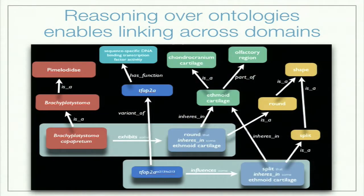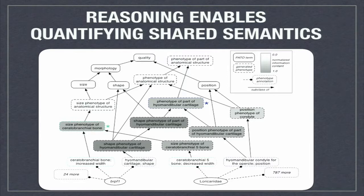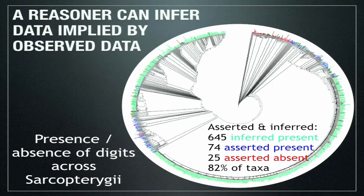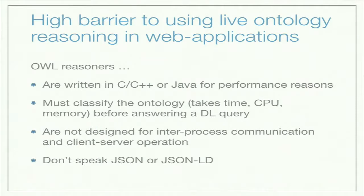OWL reasoning enables us, for example, to link natural language descriptions from very different scientific disciplines that use different terminologies and different formats. It can also enable us to assess quantitatively the semantics shared between different descriptions in natural language. And finally, it can allow us to infer data that's not actually asserted — not actually observed — but is implied from the observations by what we know in a certain domain, which can be very powerful and fill a lot of gaps.